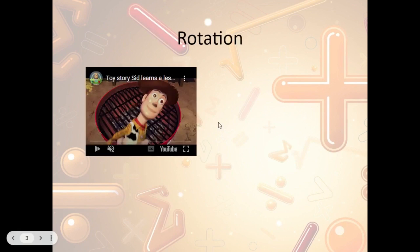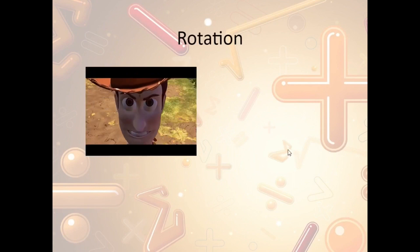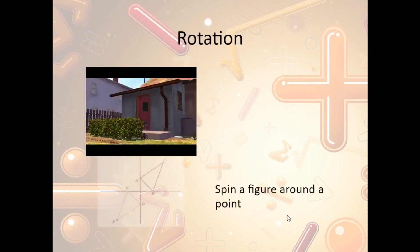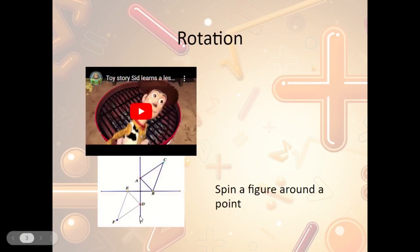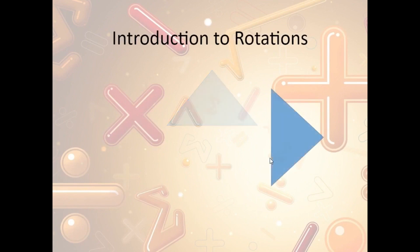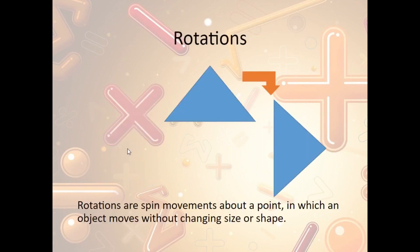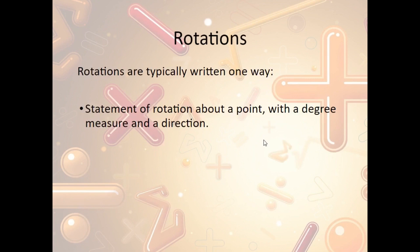What is a rotation? A rotation is a spin movement — a spin of a figure around a point. We have a triangle; if we spin it, it ends up in a new position. Introduction to rotations: spinning a triangle to the right yields a new orientation; spinning again gives another, and again another. Rotations are spin movements about a point in which the object doesn't change size or shape, but does change direction. Rotations are written as a statement about a point — for everything we do it will be the origin — plus a degree measure (90°, 180°, etc.) and a direction.